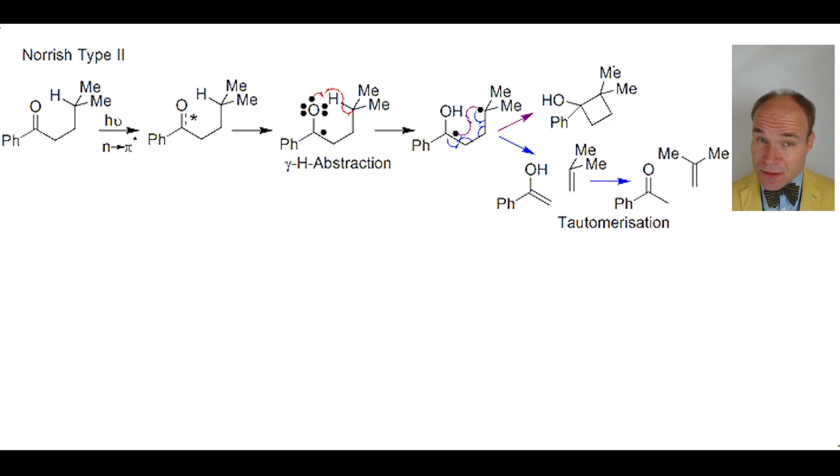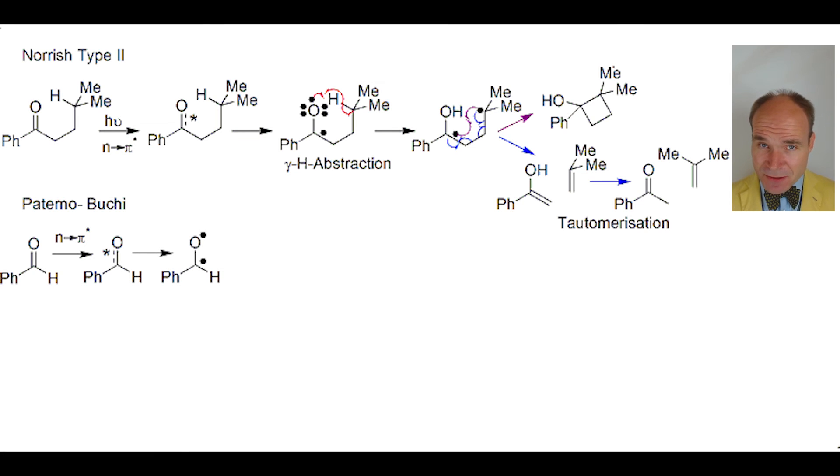Another reaction that utilizes the diradical, former carbonyl, is the Paterno-Buchi. In common with Norrish type 2, the carbonyl is excited with light and then ultimately generates the diradical.